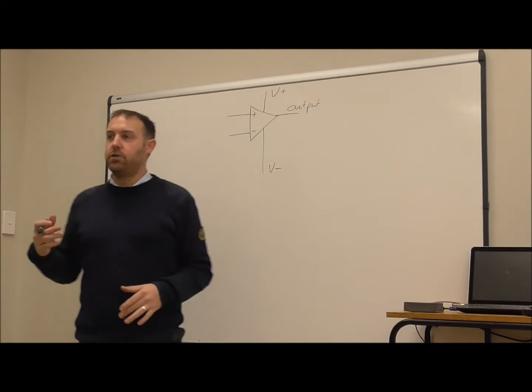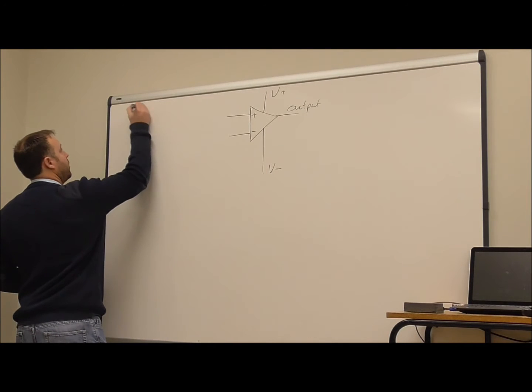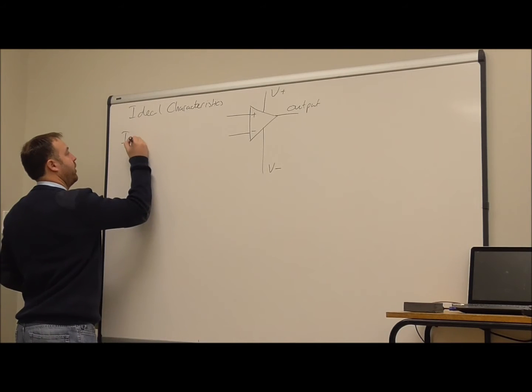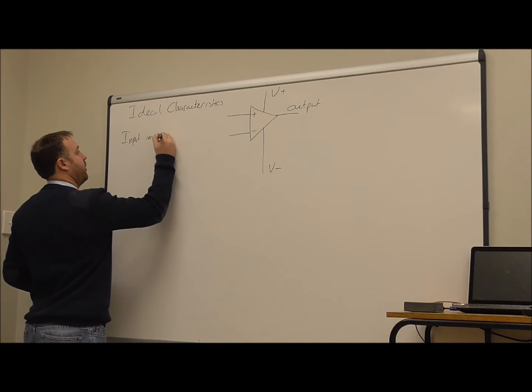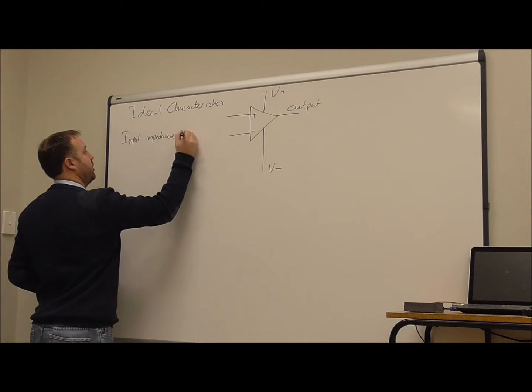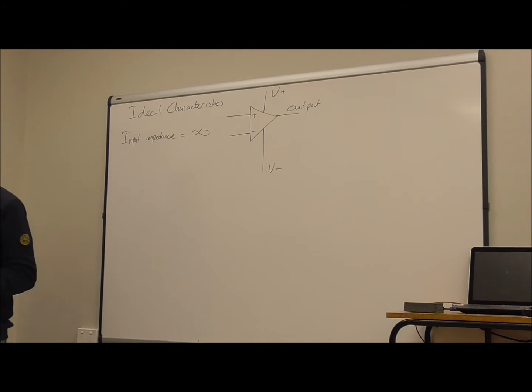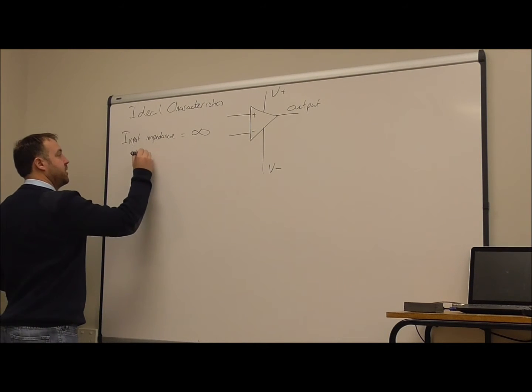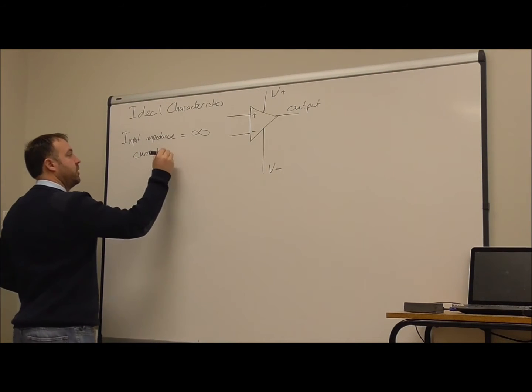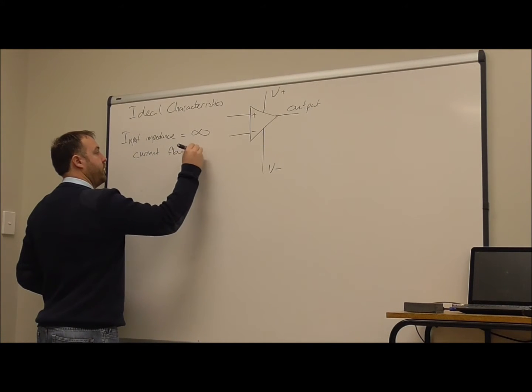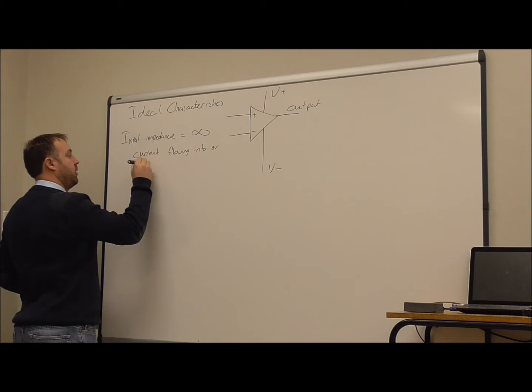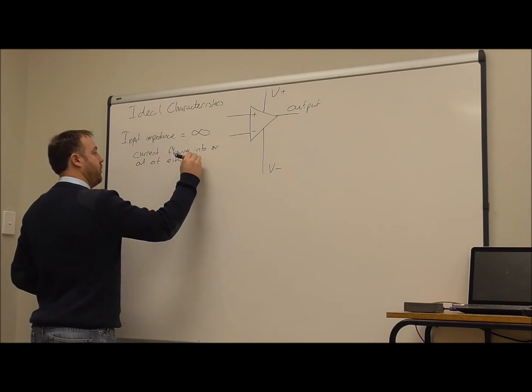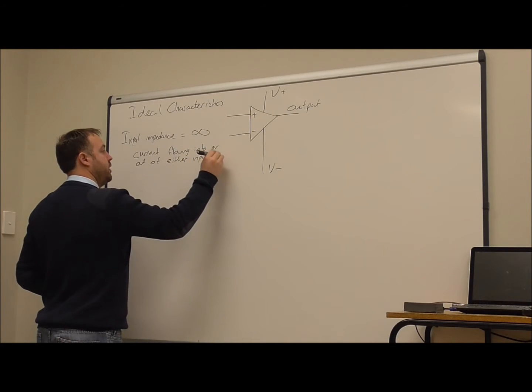So the ideal characteristics of an op-amp are, let's have a look at the inputs first. The input impedance is infinity. Now what does that mean? What does the input impedance mean? It really means that the current flowing either into or out of either input is zero.